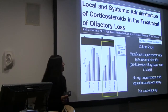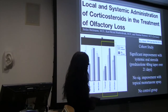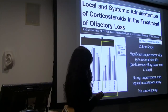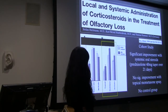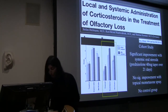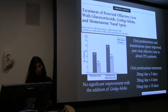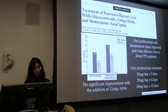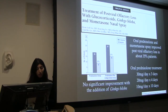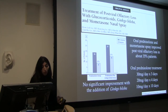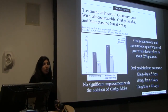A 2004 cohort study tried systemic oral steroids — a taper over 21 days — compared with mometasone spray, though there was no control group of nothing. They did find significant improvement with oral steroids. Another study examined whether steroids or ginkgo biloba might help, putting all patients on mometasone and then having a prednisone group alone or prednisone plus ginkgo biloba. There was no significant improvement with the addition of ginkgo biloba, but there was improvement with oral prednisone in the post-viral olfactory loss group.